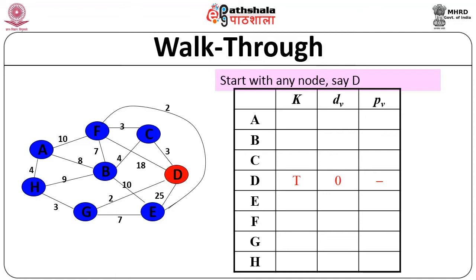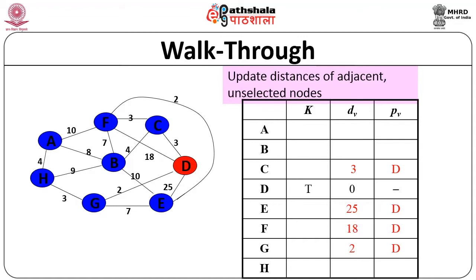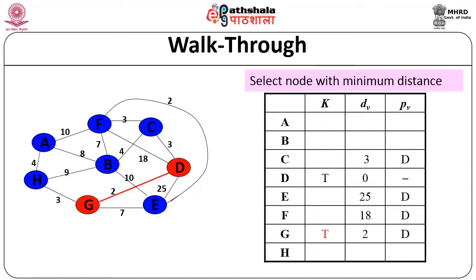Starting with D: K becomes true, meaning you have visited the node, and the initial node is labeled 0. We have not used any edge yet. From D you have 4 edges: C, F, B, and E. D-C has weight 3, D-E has weight 25, D-F has weight 18, and D-G has weight 2. Obviously you select G because it has the minimum weight. So you select the node that connects to D already in the tree with the minimum edge. Next, update the distances of adjacent unselected nodes.